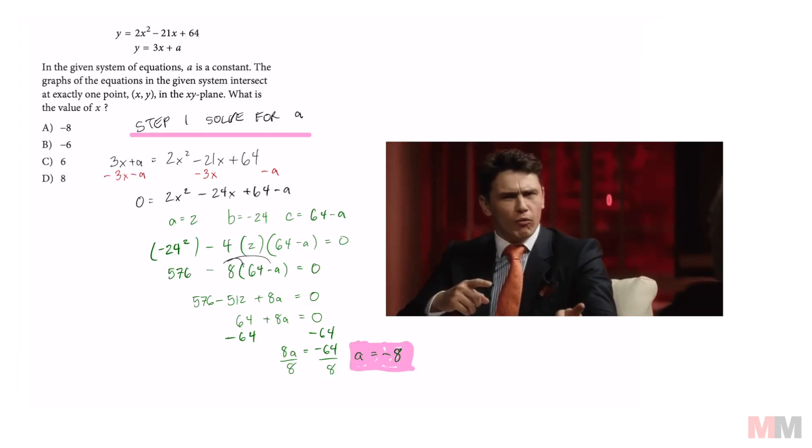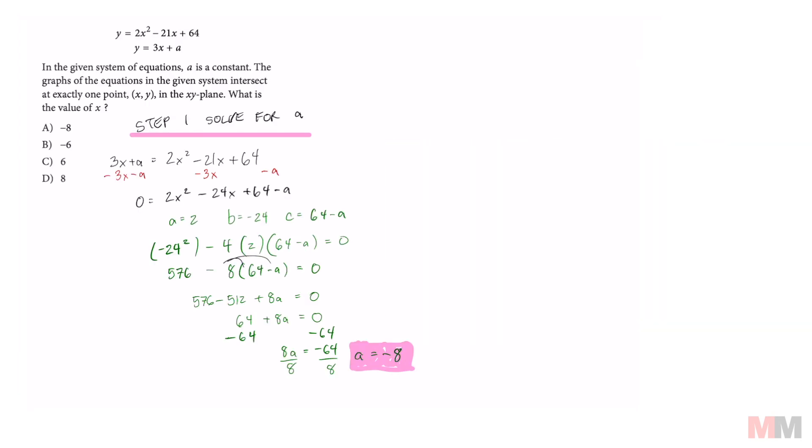So just to recap what we did, first we did substitution. Then we used the discriminant formula to solve for A. And then we solved for A.